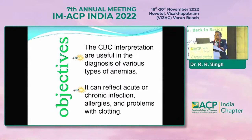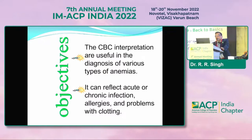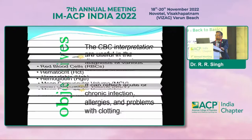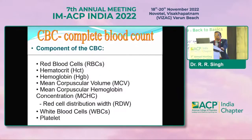These are the objectives: whenever we see the CBC report, we interpret which parameters are useful for the diagnosis of various types of anemia — whether it is microcytic, macrocytic, or normocytic. It can also reflect acute or chronic infections, various kinds of allergies, problems related with clotting, and malignancies like leukemia.